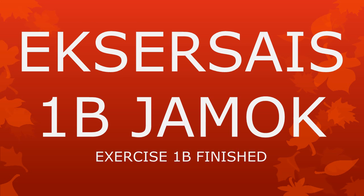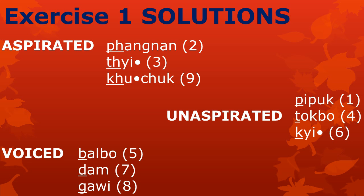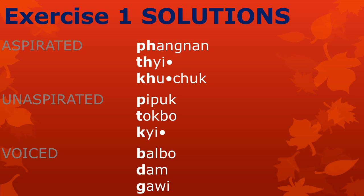Did you hear that? Now let me give you the solutions. Words with an aspirated first consonant are: number 2 pangnan, number 3 thei, and number 9 kukchuk. Words with an unaspirated first consonant are: number 1 bibuk, number 4 dokbo, and number 6 gei. The words balbo, dam, and gawi start with voiced consonants. Now let's read them together. Please repeat after me: pangnan, thei, kutu, bibuk, dokbo, gei, balbo, dam, gawi.